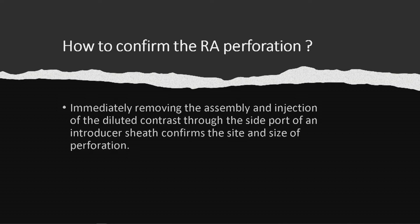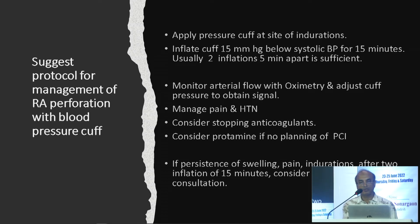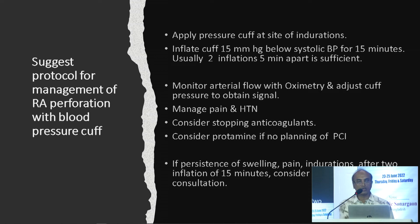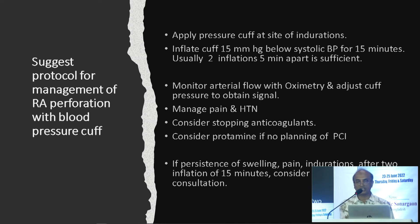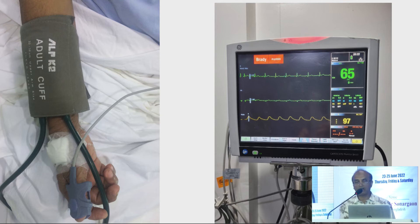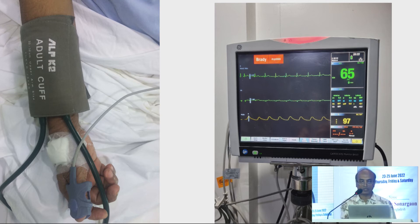To confirm perforation: immediately remove the assembly and inject diluted dye. Protocol: apply a pressure cuff at the site of induration, inflate for 15 minutes at 10–15 mmHg below systolic blood pressure, monitor arterial flow and oximetry, adjust cuff pressure to maintain signal, manage pain and hypertension, consider stopping anticoagulation, consider protamine if PCI is not planned. If persistent swelling and pain after two inflation cycles of 15 minutes, consider urgent surgical consultation. The plethysmographic curve of the finger should be present — if it disappears, we are applying excessive pressure, so the ideal cuff pressure is 10 mmHg below systolic.